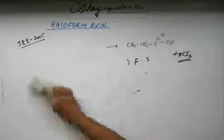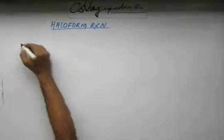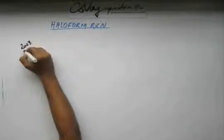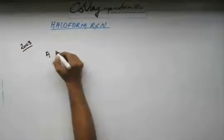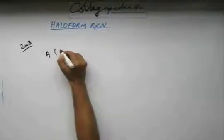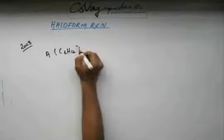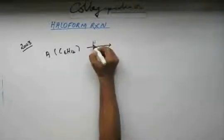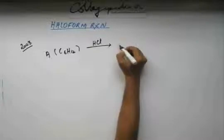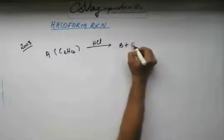So let's solve one last problem concerning this reaction and then we will move ahead with other reactions. At JEE in 2003 they asked this problem. It said that there is a compound A having molecular formula C6H12, and then you are adding HCl on this and you are getting B plus C.